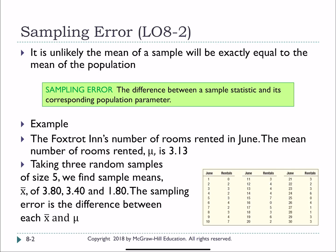Here's an example. We have this inn called Foxtrot, and we're looking at the number of rooms they rented each day in June. If we take the entire 30 days of June, we find that the average number of rooms rented or mu is 3.13. However, if we take three random samples of five days each, we might come up with sample means of 3.8, 3.4, and 1.8. So the difference between the sample mean and the population mean is called the sampling error.